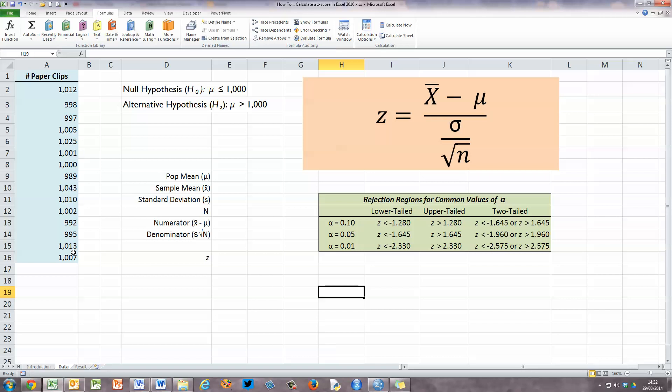So the first thing I need to do with my Z-test is to set out my null and alternate hypothesis, and that's fairly straightforward. My null hypothesis, H₀, is that μ, the population mean, is less than or equal to 1,000. And my alternate hypothesis, Hₐ or H₁, is that μ, the population mean, is greater than 1,000.